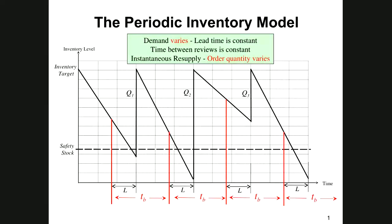This is the second part of Lesson 14, and in this situation we're going to consider the periodic review inventory model. Again, we have variable demand. Everything else is constant - lead time is constant, the time between reviews is constant, and again as before with our EOQ model, we have instantaneous resupply as we go forward.